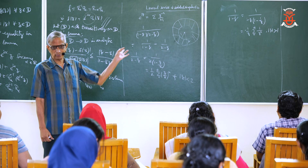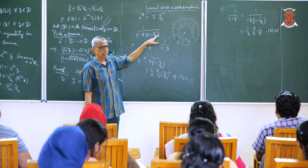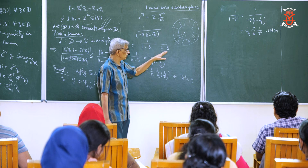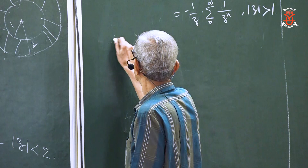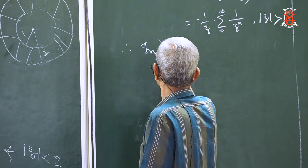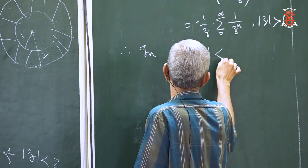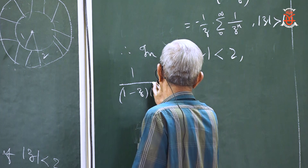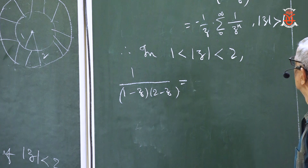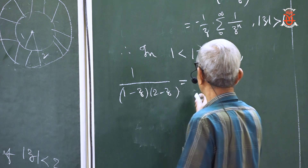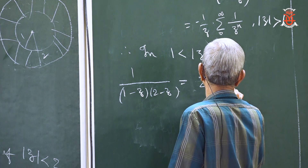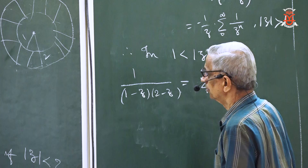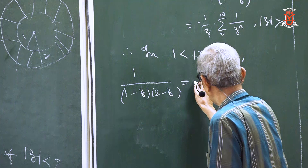If you combine both expansions, you can write that this function has a series expansion consisting of both terms combined. The positive powers come from one part and the negative powers from the other.